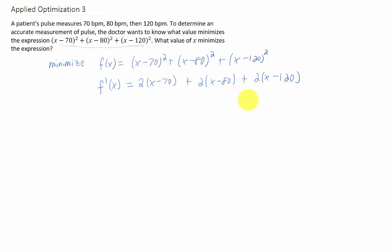Let's simplify it. I just distributed a 2 through parentheses, and now I'm going to combine like terms. I'm getting that our first derivative is 6x minus 540.